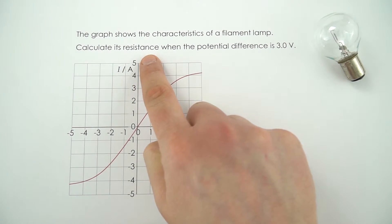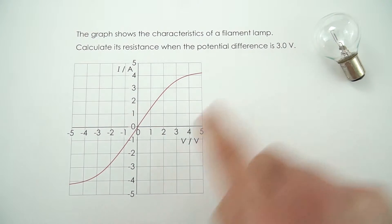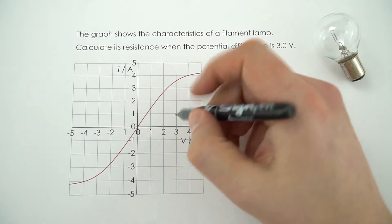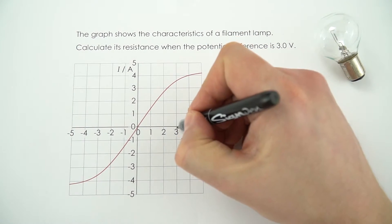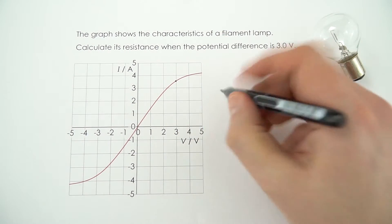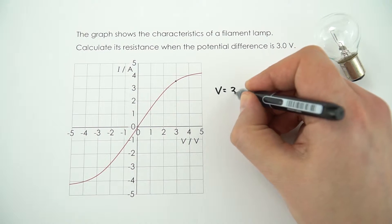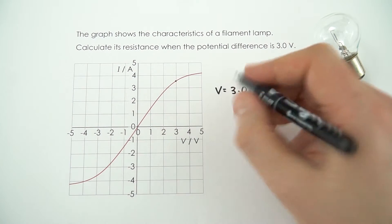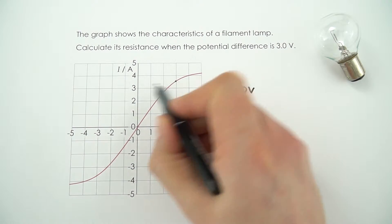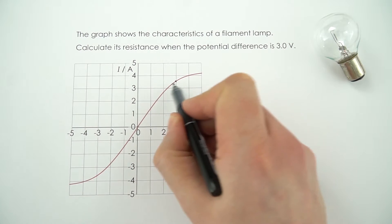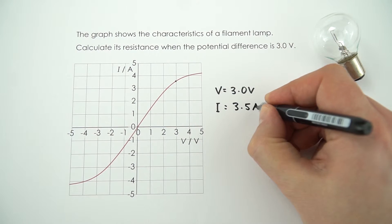We need to calculate its resistance when the potential difference is 3.0 volts. To do this, we look at the value at that point on the graph — where it's equal to 3. When the potential difference is 3.0 volts, we read off the current, which is midway between 3 and 4. So the current is equal to 3.5 amps.